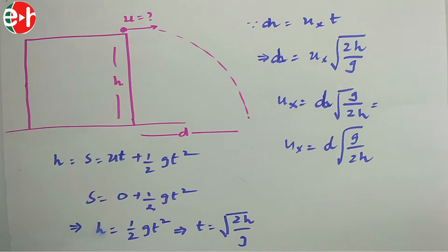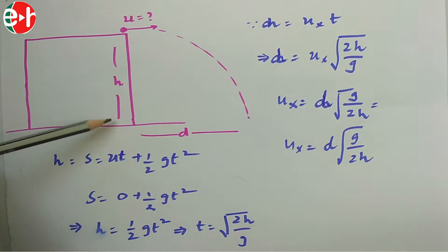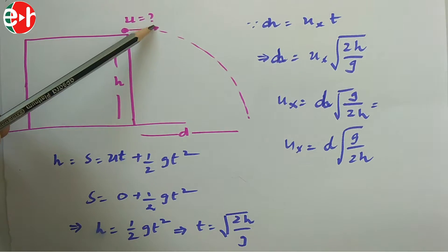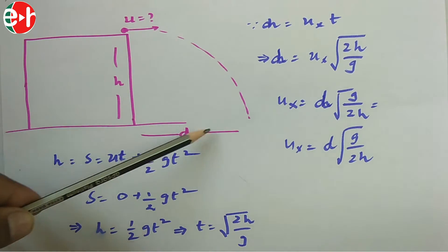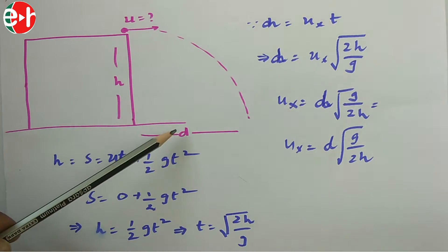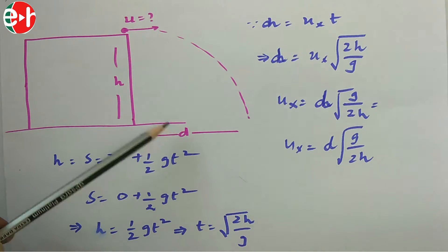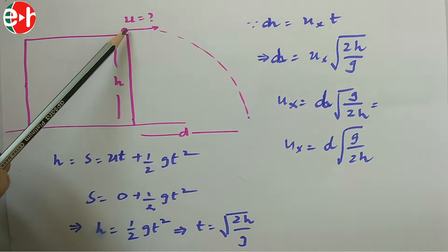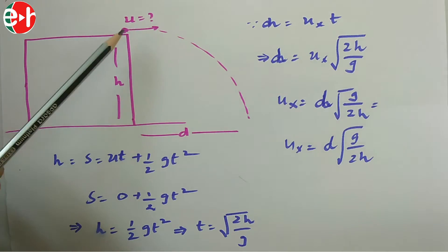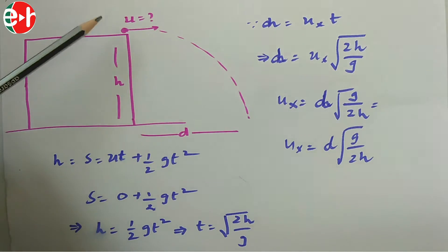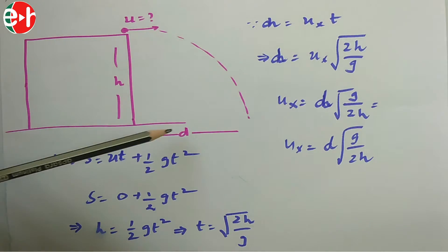In this problem, a particle is projected horizontally from the top of a table of height H with some velocity U. It touches the floor at a distance D from the table. The question asks for the velocity of projection — the velocity with which the object is projected horizontally.